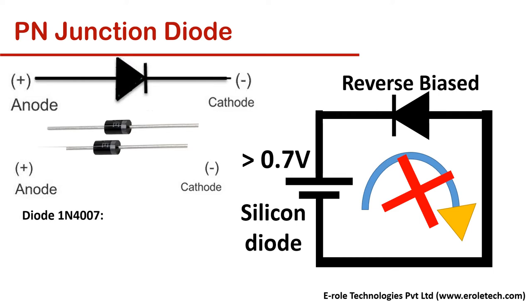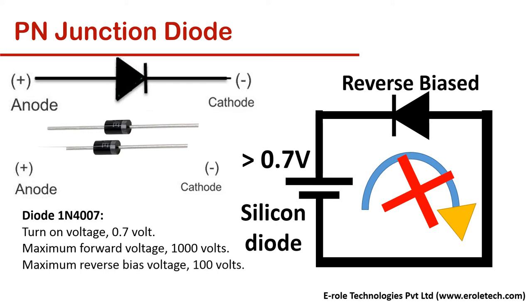For example, diode 1N4007 has turn-on voltage 0.7 volt, maximum forward voltage 1000 volts, maximum reverse bias voltage 100 volts, maximum forward current 1 ampere.